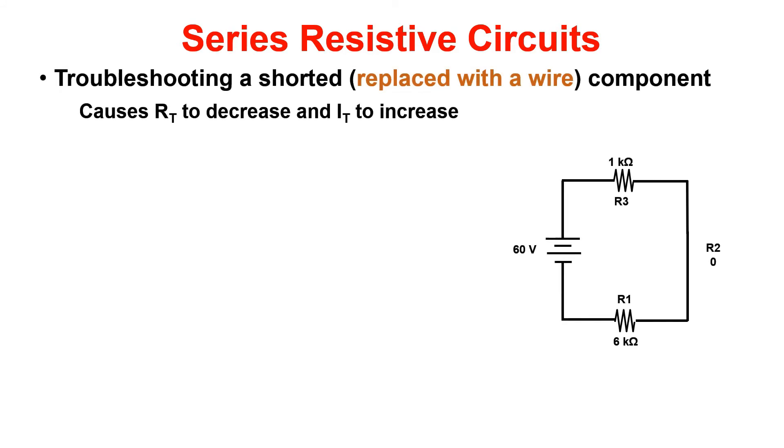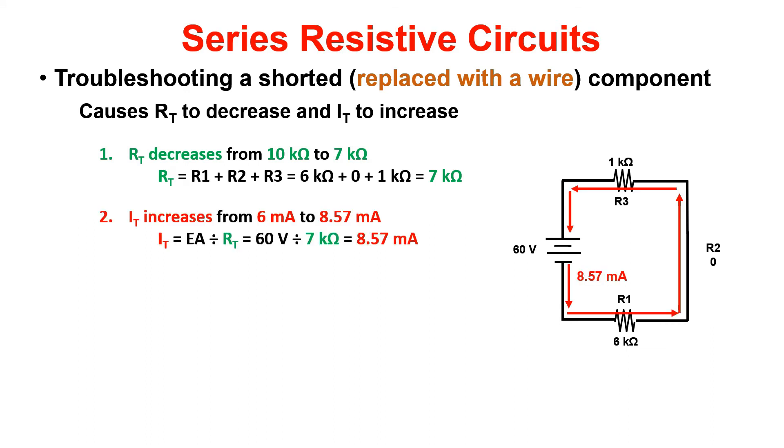Now, we will take a look at troubleshooting a shorted component. This will be noted as being replaced with a wire. This malfunction in the circuit will cause the RT of the circuit to decrease. IT will increase due to it being inversely proportional to resistance. In our sample problem here, the RT decreases from 10k to 7k. Applied voltage, 60 volts divided by resistance of 7k gives us our new current of 8.57 milliamps.